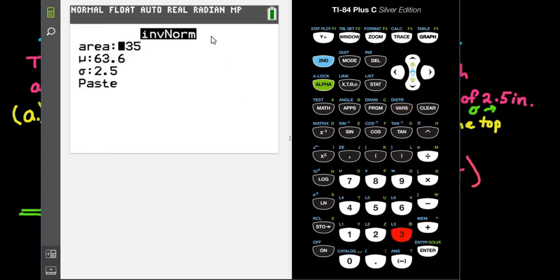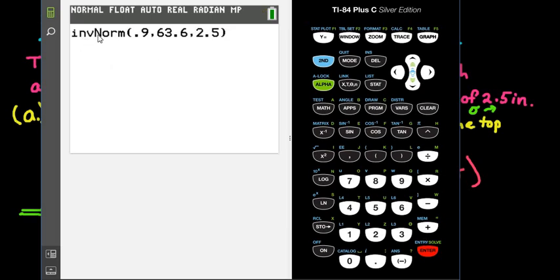Option 3 gives us the inverse norm. We would put in our area to the right and you can either type in 1 minus .10 or you can just type in the difference of .9. The mean is 63.6 and the standard deviation is 2.5. If this does not come up for you, your graphing calculator you would just put it in like this, you would put the inverse norm, you would select that, and then you would do .9.